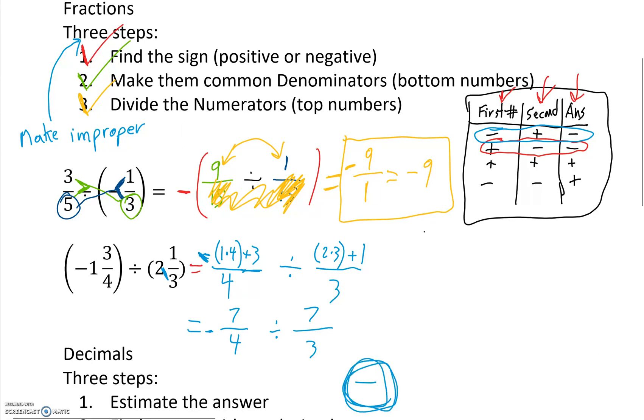And then 4 times 7 is 28. And then 4 times 3 is 12. Okay, so this number is now common denominator. Good.